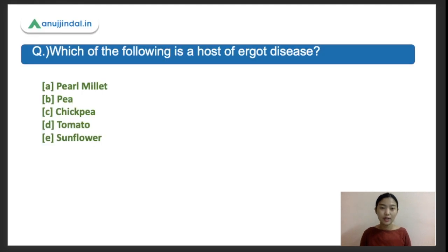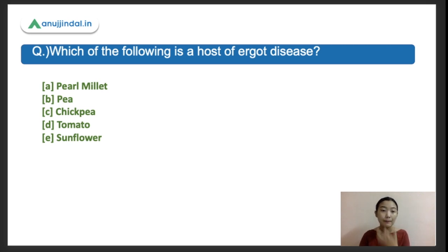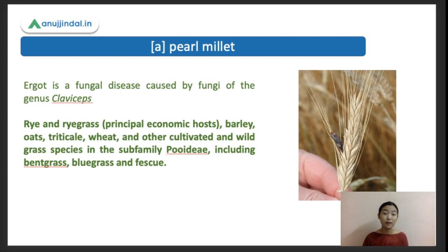Another question: which of the following is the host of ergot disease? The options are A - pearl millet, B - pea, C - chickpea, D - tomato, E - sunflower. The right answer is pearl millet. Pearl millet is the host of ergot disease. Ergot is a fungal disease caused by a fungus belonging to the genus Claviceps.